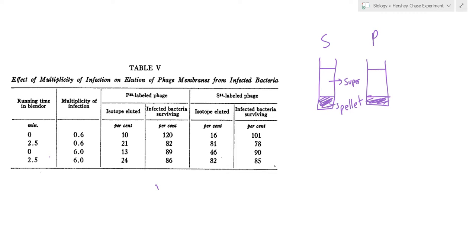We'll focus on the last two rows due to the effect being clearer there as they have a higher multiplicity of infection. When the mixture was not run in the blender at all, it was run for 0 minutes, then it was straight up centrifuged and we found that 13% of the phosphorus ended up in the supernatant, whereas 46%, almost half of the sulfur ended up in its supernatant.